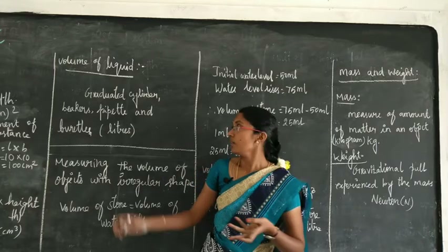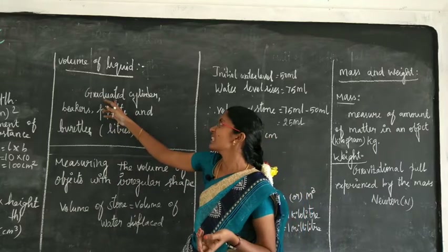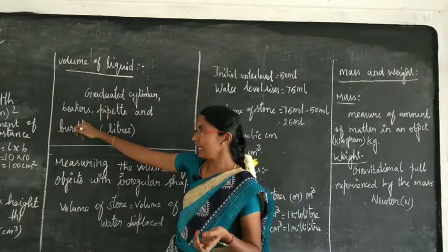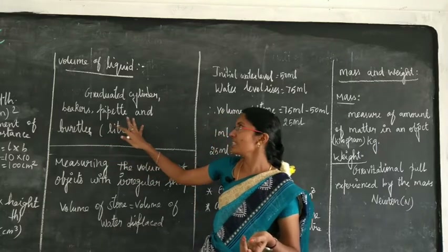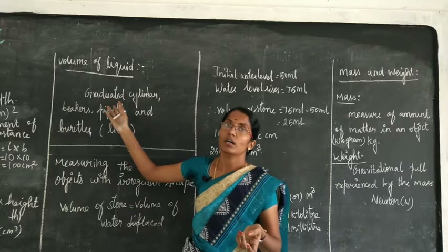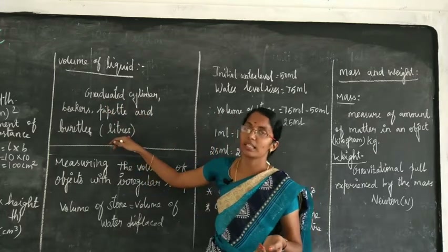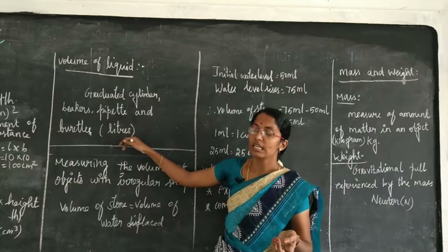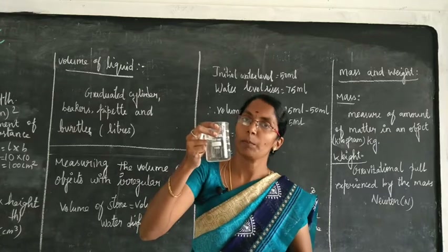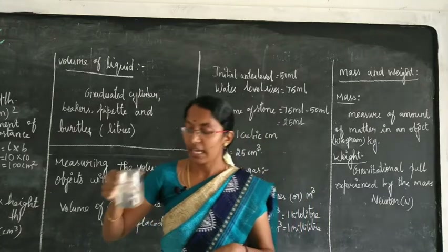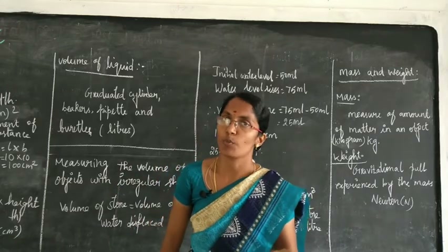The items used for finding the volume of liquid are graduated cylinder, beaker, pipette, and burette. The unit of liquid volume is liters. For smaller quantities, we use milliliters, and for higher volume we use liters.